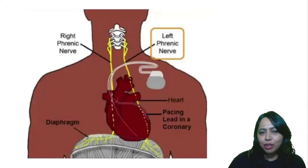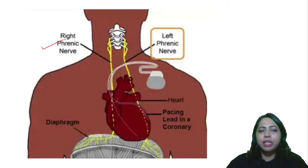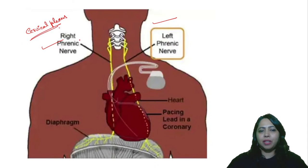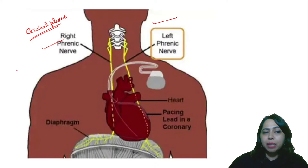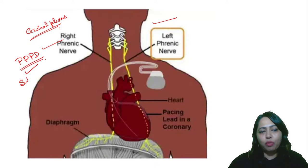We start with the first topic — the phrenic nerve. There is a right phrenic and a left phrenic. You should remember that the phrenic nerve is from the cervical plexus, and it supplies the pericardium, pleura, and diaphragm. Remember the mnemonic 3PD for the supply of the phrenic nerve.